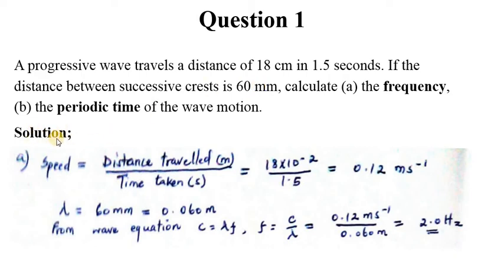So as a solution, we would find the speed of this wave which is found by distance traveled over time taken in seconds and distance in meters. We have been given that a progressive wave travels a distance of 18 centimeters. So we convert this 18 centimeters into meters, that will result into 18 times 10 raised by negative 2, and seconds is 1.5. Dividing this we end up with 0.12 meters per second. That is the speed. Why are we finding the speed? It is one of the very critical components of the wave equation which is going to help us find frequency and then periodic time.